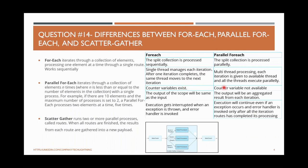For Each has a counter variable since it executes one after another in order. Parallel For Each happens in parallel so it doesn't need to maintain a counter variable. The output of For Each scope is the same as the input — if you had a collection going in, the same payload is available when it comes out. But for Parallel For Each, the output is the aggregated result from each iteration — whatever each thread produced is aggregated into the output.